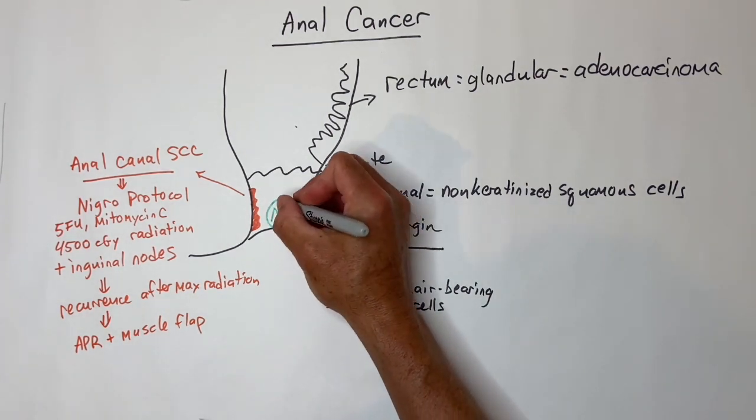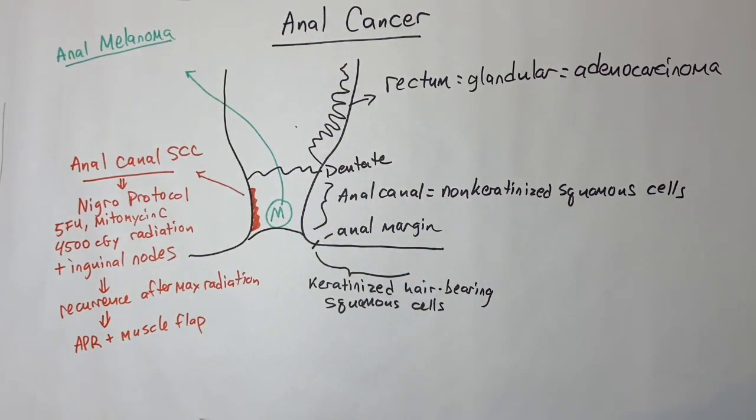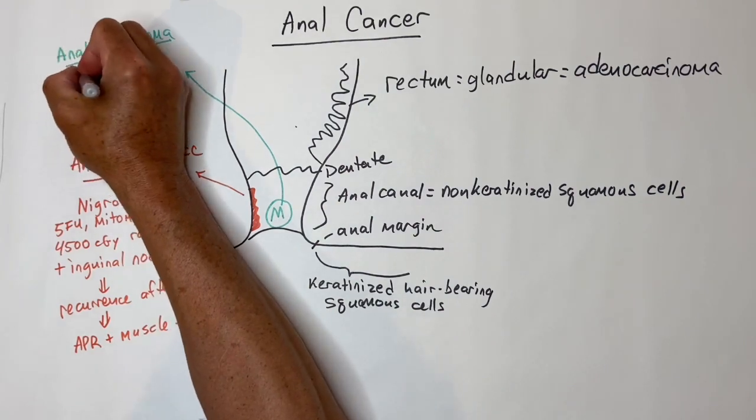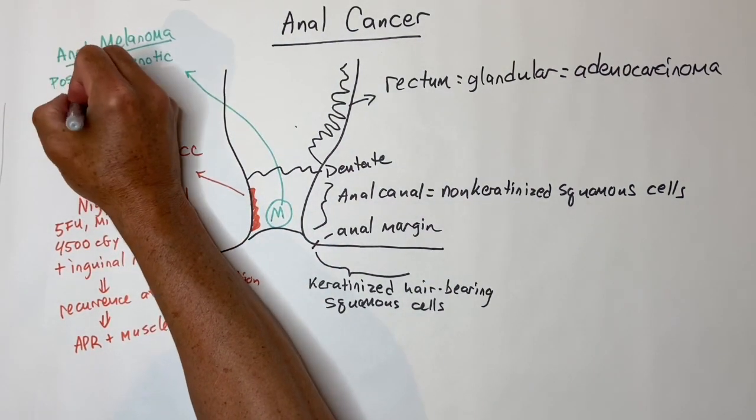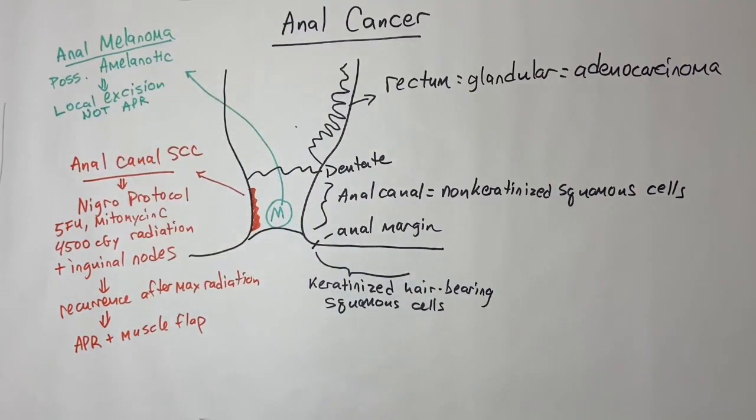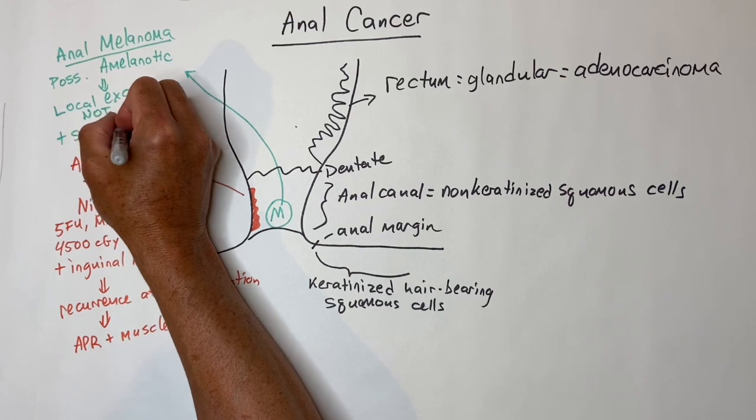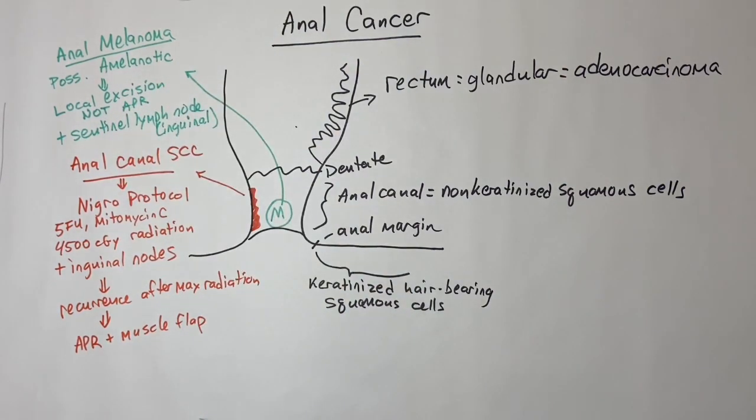Anal melanoma can sometimes be mistaken for external hemorrhoids and can be amelanotic and fleshy colored. If you find one of these, local excision is better than APR surgery. APR does not show improved survival. Be sure to use a PET scan on the patient and consider a sentinel lymph node biopsy as inguinal node spread is common.